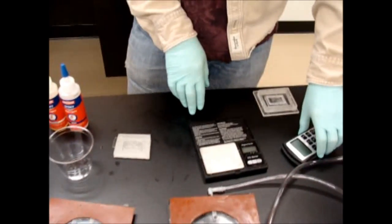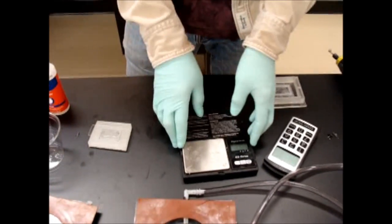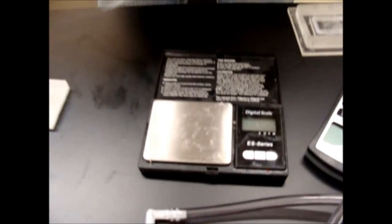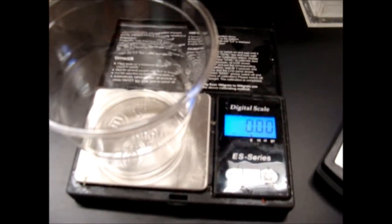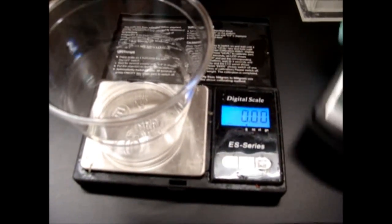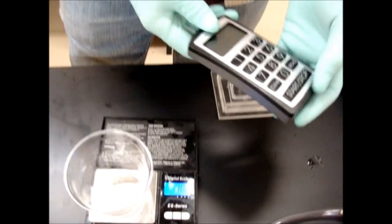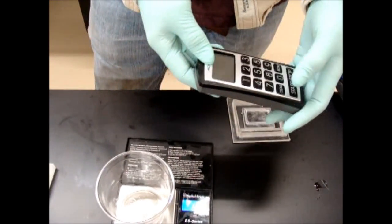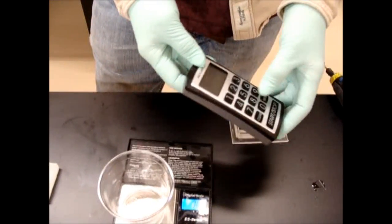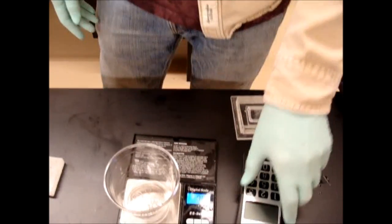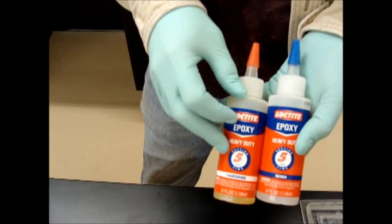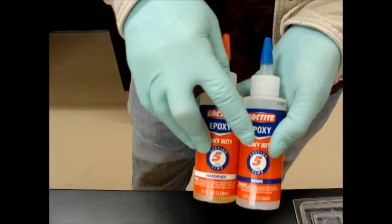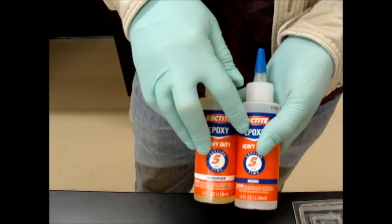We're going to be using a couple of pieces of equipment here. This is a scale that I got on eBay for about $10 with pretty good resolution down to the tenths of grams. This is a digital timer from Walmart for $10. What we're making our impression with is this two-part epoxy, Loctite brand five-minute epoxy, that we got at Lowe's hardware store.